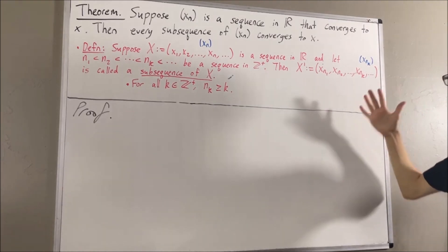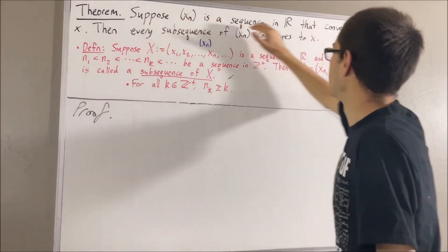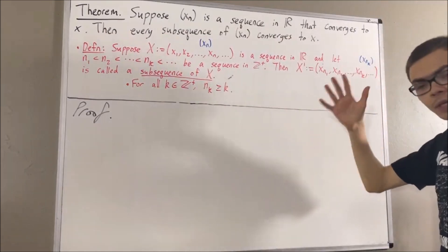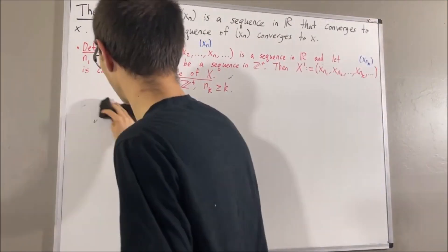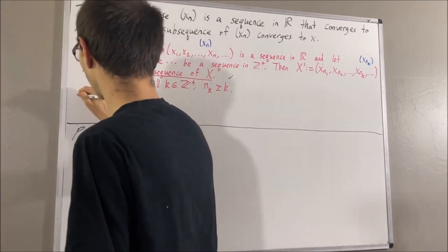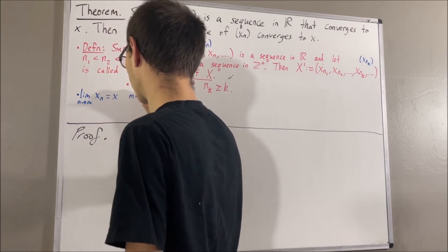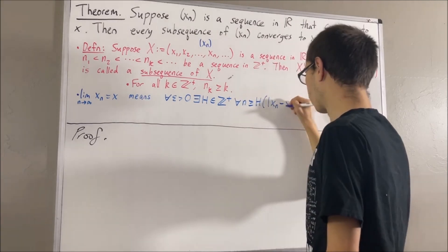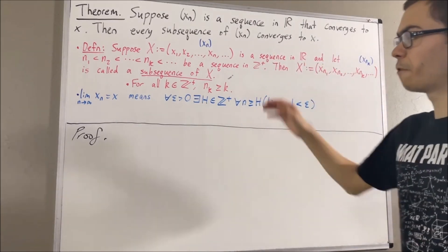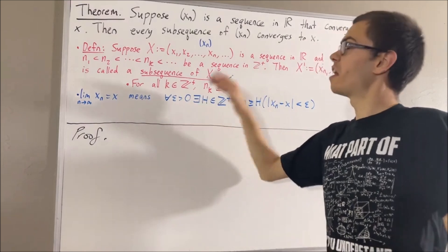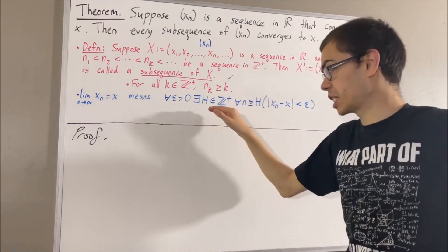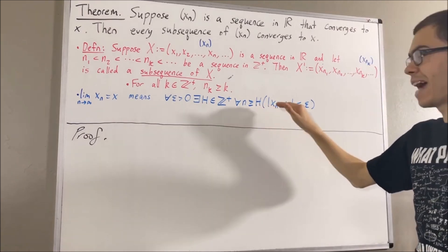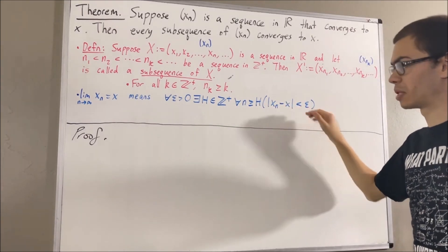Next, what does it mean for xn to converge to x? Well, by the definition of the limit of a sequence, it means for every epsilon greater than zero, there exists a positive integer h, such that for all positive integers n greater than or equal to h, the absolute value of xn minus x is less than epsilon.